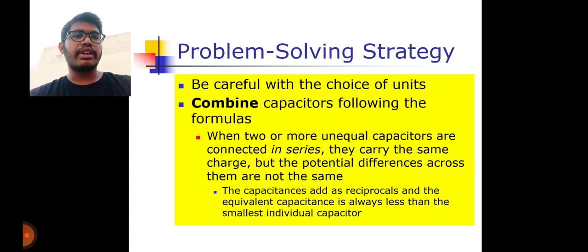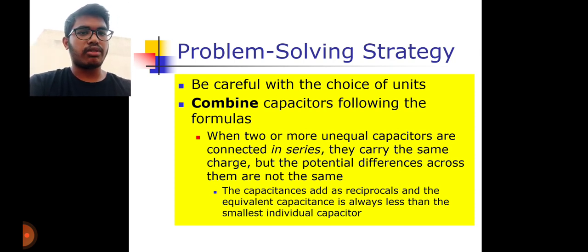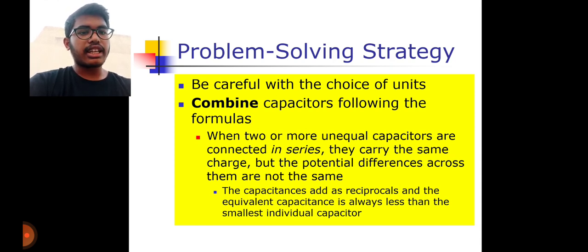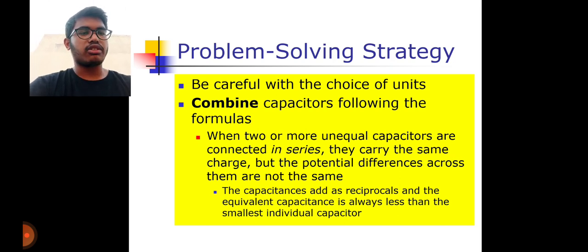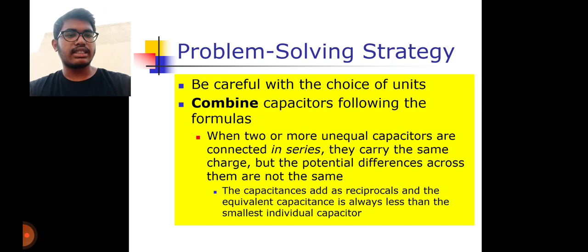Now by example, you can see how to combine capacitors using these formulas. When two or more unequal capacitors are connected in series, they carry the same charge but the potential differences across them are not the same. The capacitors add as reciprocals, and the equivalent capacitance is always less than the smallest individual capacitor — this is very important to remember.